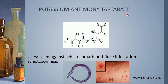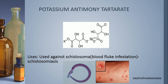The last drug under anti-helminthic drugs is potassium antimony tartrate. It is used against Schistosoma — blood fluke infestation — and the disease name is schistosomiasis. This blood fluke causes infestation in the patient body, and blood-red color spots can appear on the skin because of Schistosoma infestation. Thank you all.